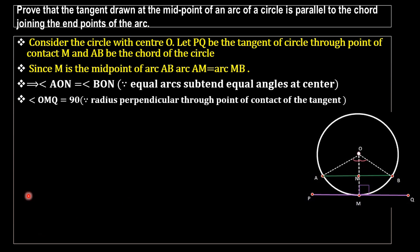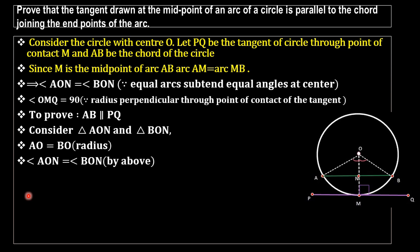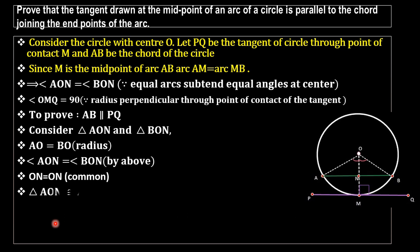To prove AB parallel to PQ, consider the two triangles AON and BON. We have OA equals OB because they are radii. Angle AON equals angle BON from the equal arcs result above. Side ON equals ON, which is the common side. Hence by the SAS (Side-Angle-Side) rule, triangle AON is congruent to triangle BON.